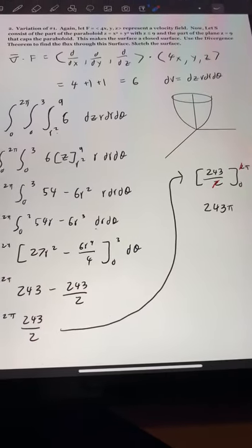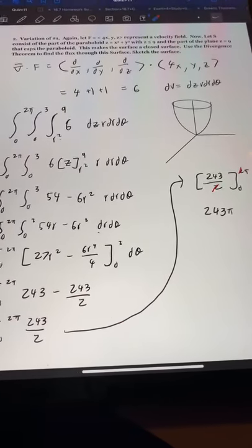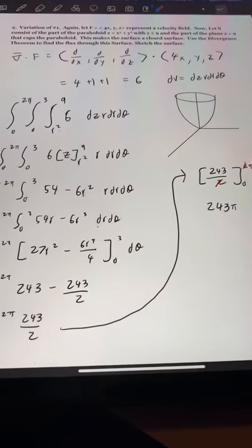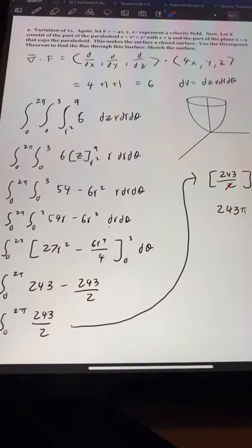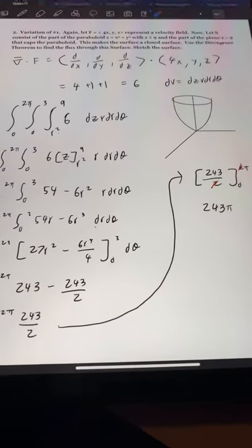And we have S that consists of the part of the paraboloid z equals x squared plus y squared, with it being capped off at 9, or z is less than or equal to 9.